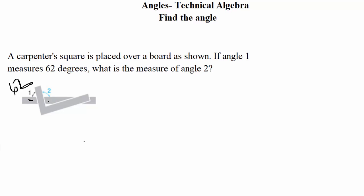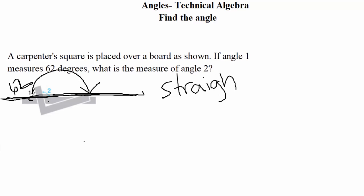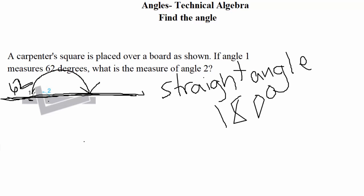The main thing we need to notice in this example is to take a look at the board. The board is laying flat and we're placing a carpenter's square on it. A board is straight — it's a straight line across. So we need to keep in mind what a straight angle equals. Looking from angle one all the way to angle two across this board, this is called a straight angle, and a straight angle equals 180 degrees — it's a semicircle.